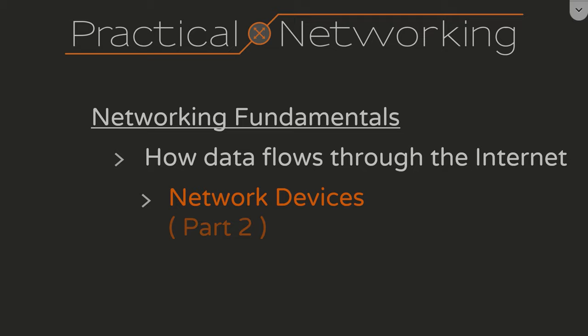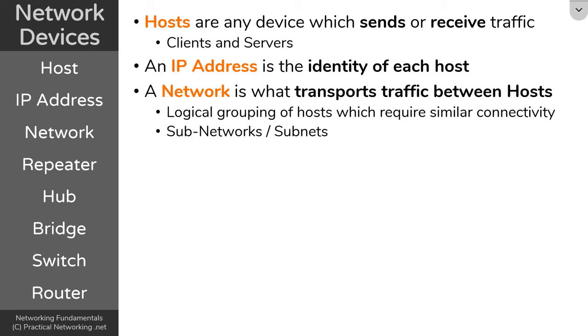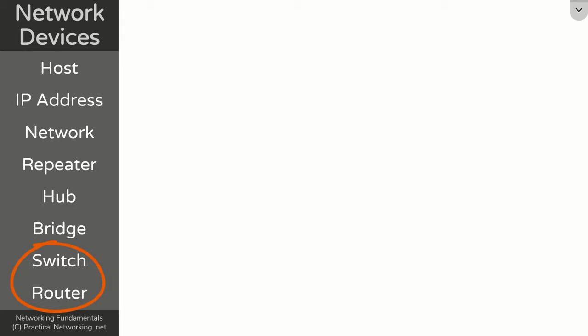Hello, welcome to the second part of our lesson on network devices. This is the first lesson from the first module of my new course on networking fundamentals. The purpose of this module is to teach you how data flows through the internet. In part one of this lesson, we discussed the concepts of a host, an IP address, and a network. If you haven't watched that video, go ahead and pause this video right now and watch the first video — there'll be a link in the description. In this video, we're simply going to continue right where we left off. The main idea we want to teach in this video are these last two devices: switches and routers. But we can't really understand those until we understand where we've come from.